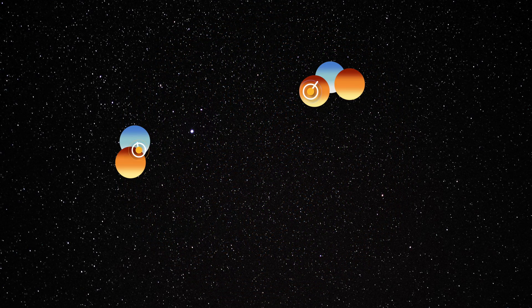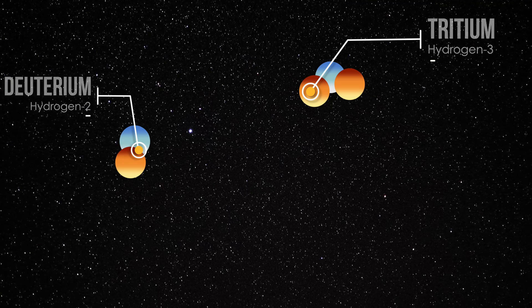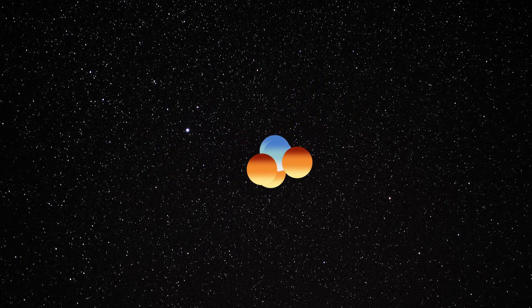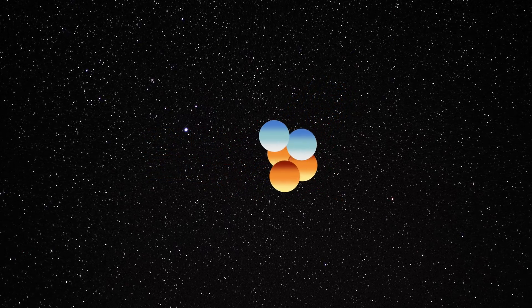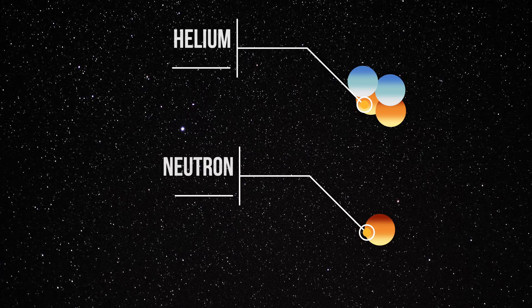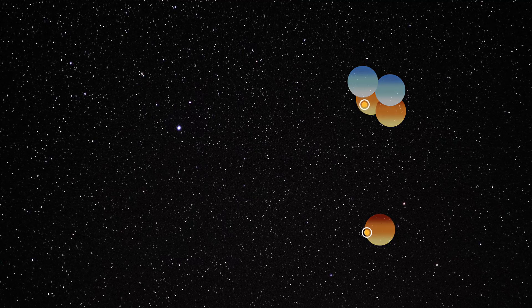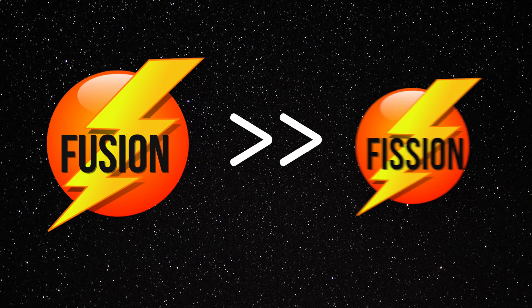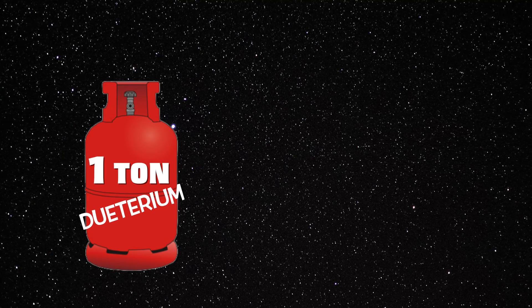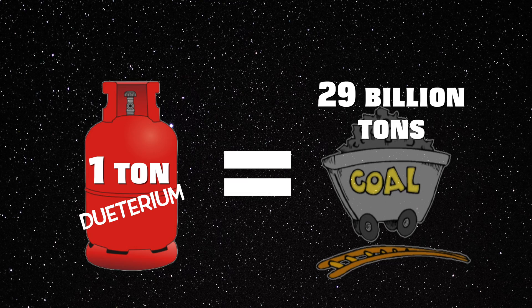Isotopes of hydrogen — tritium, or hydrogen-3, and deuterium, or hydrogen-2 — unite under extreme pressure and temperature to produce a neutron and a helium isotope. Along with this, an enormous amount of energy is released, which is several times the amount produced from fission. Roughly one ton of deuterium has the energy equivalent of approximately 29 billion tons of coal.